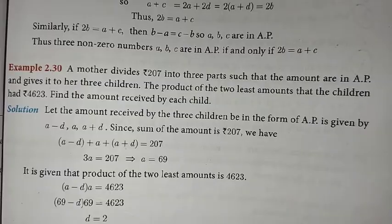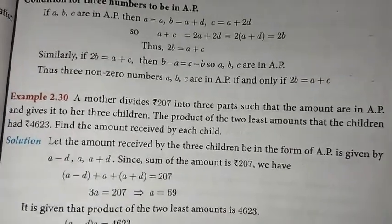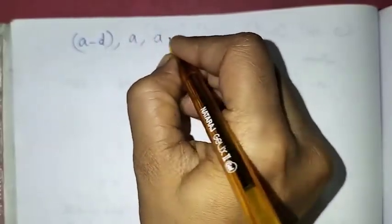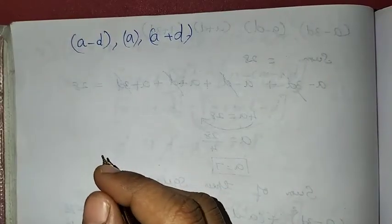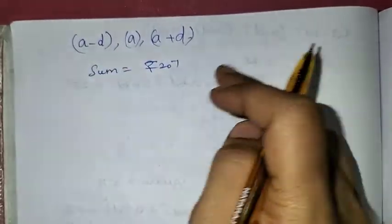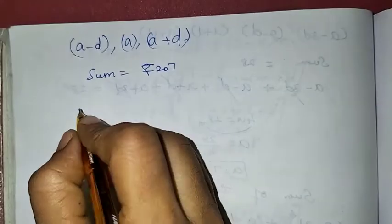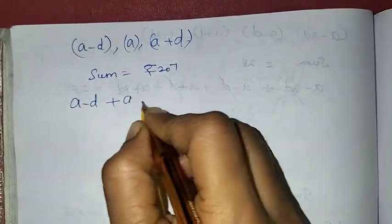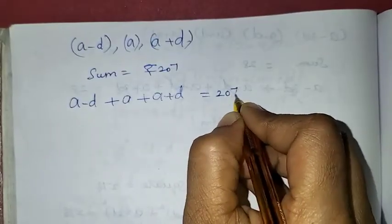So we take 3 consecutive AP terms. The sum gives us: (a - d) + a + (a + d) = 207.